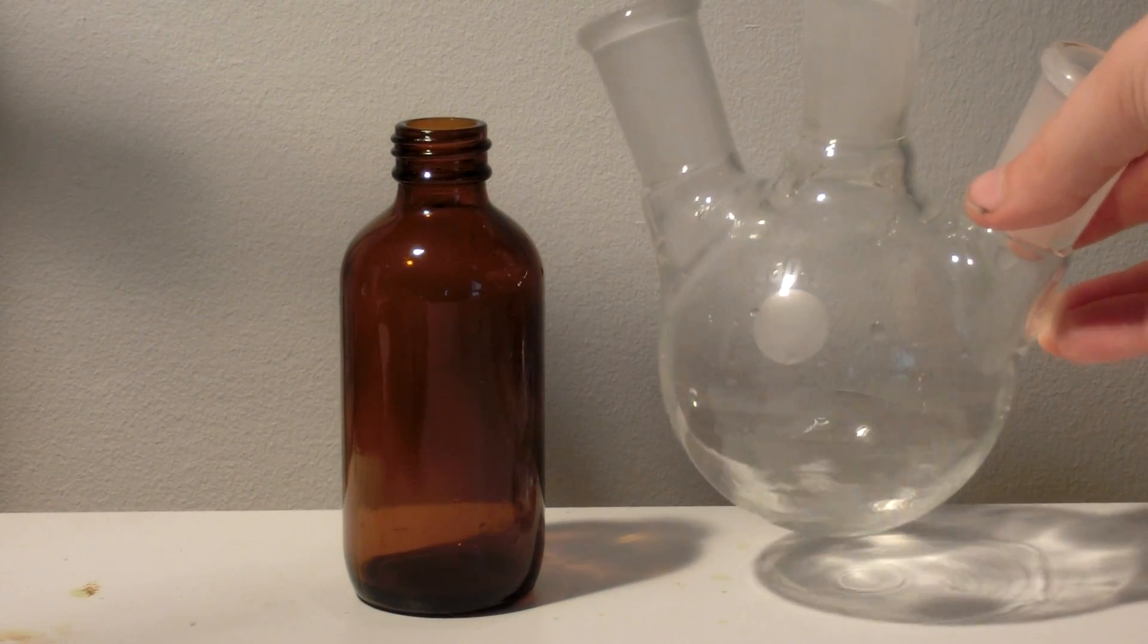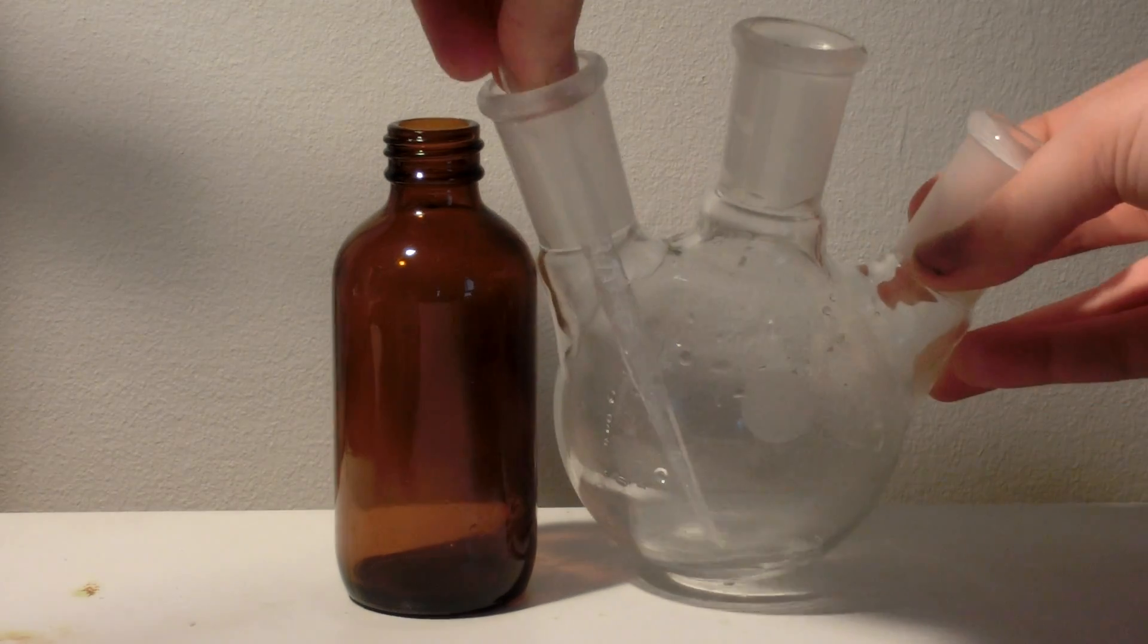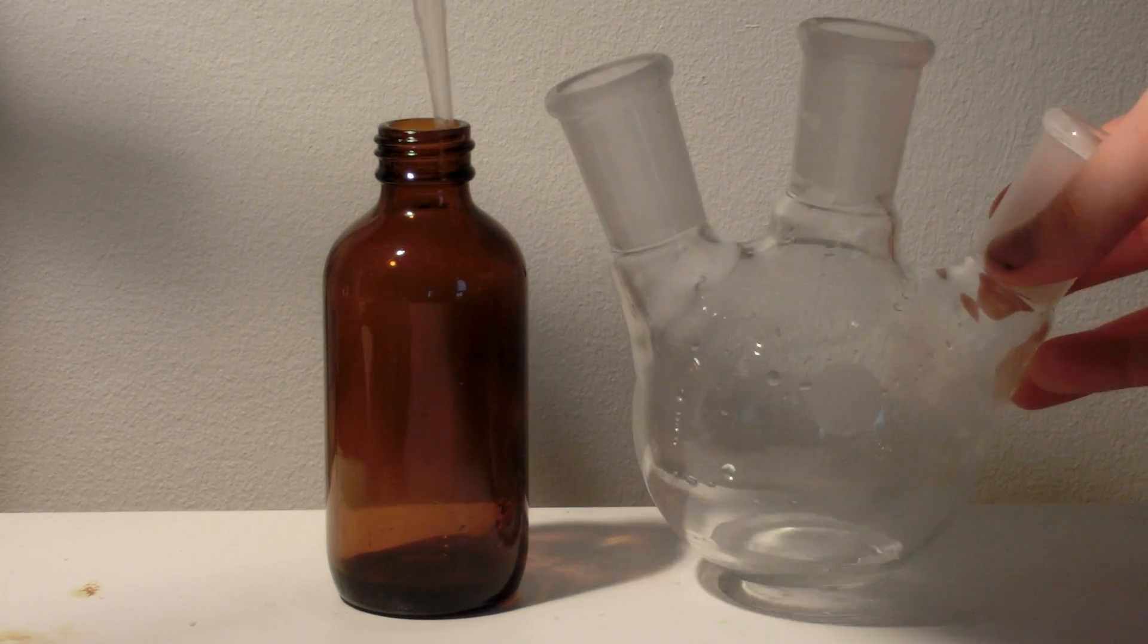This is our final yield of formic acid. It should be added to an airtight amber glass bottle for storage.